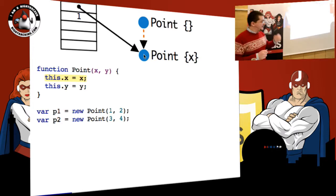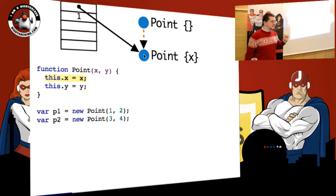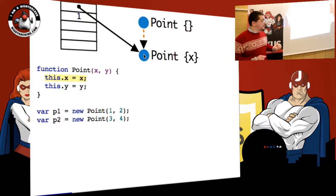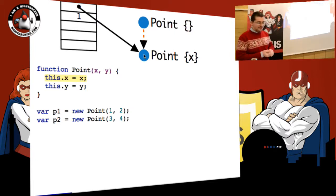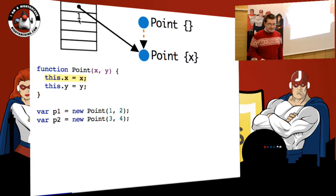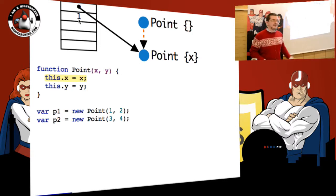When you execute the assignment — it's imperative code — the assignment creates a property. It creates another shape. Shapes are immutable in that sense: it's not like a hash table where when you put a key, the hash table changes. Instead, a new shape is created. Now it's still a point created with constructor point, but now it has a property X and we put the value there. You can guess what happens with the execution of the next statement — another shape is created.